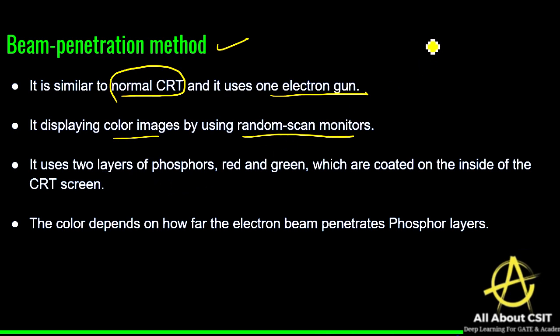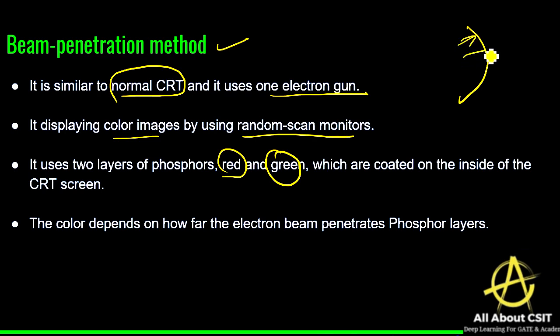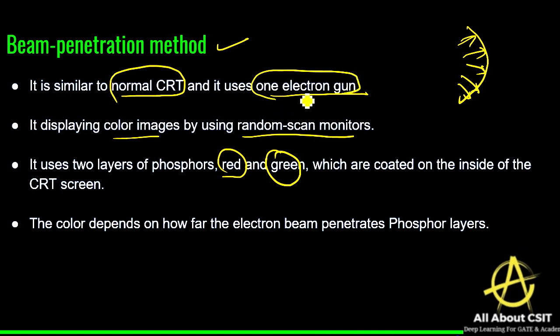Beam penetration uses two layers of phosphorus coated on the inside of the CRT screen — one red and one green. The color displayed depends on how far the electron beam penetrates these phosphorus layers. It consists of only one electron gun, and the two phosphorus layers are coated inside the CRT screen.